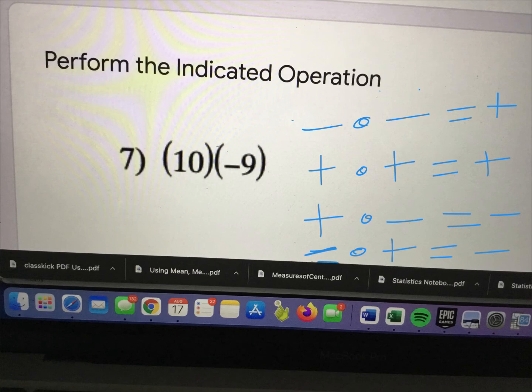So in this case, we're multiplying a positive times a negative number. So we're going to look at this rule. 10 times 9 is 90. Positive times a negative is a negative. So this is going to be negative 90.